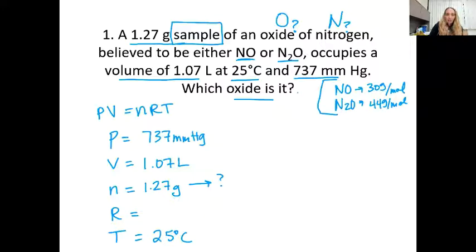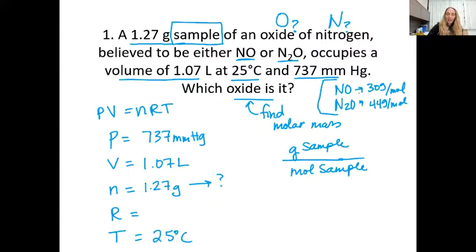So which oxide is it? The way I'm going to tell is I'm going to find the molar mass. And to find that molar mass, I need to find grams of the sample divided by the moles of the sample. And if I can find that molar mass, I can match it to either the 30 grams per mole or to the 44 grams per mole. So my problem gives me grams of sample, and now I need to find moles of the sample using PV equals nRT.